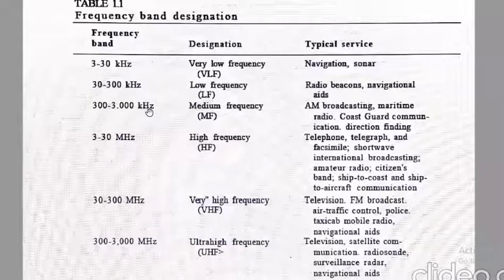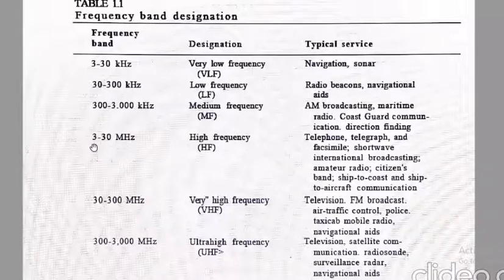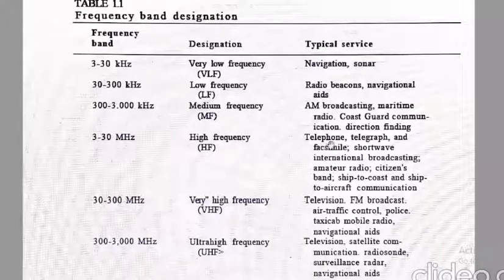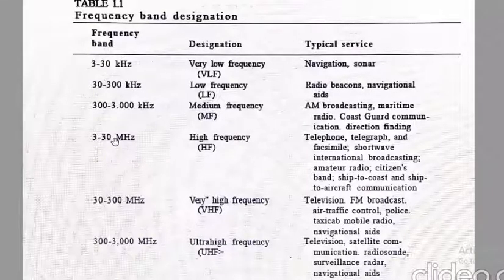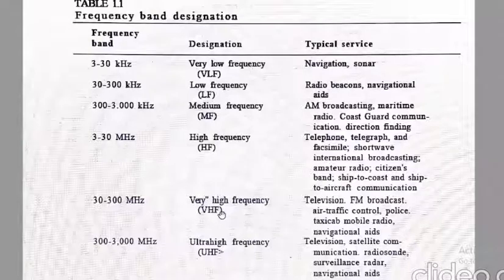3 to 30 MHz is High Frequency (HF), used for telephone, telegraph, short wave, international broadcasting, and ship-to-coast and ship-to-aircraft communication. 30 to 300 MHz is Very High Frequency (VHF), used for telephone, television, and police and taxi mobile radio. 300 to 3000 MHz is Ultra High Frequency (UHF), used for satellite communication and radar navigational aids.